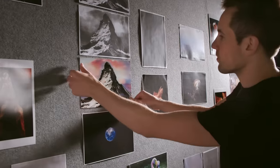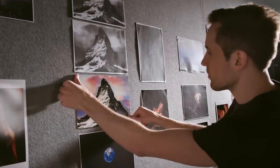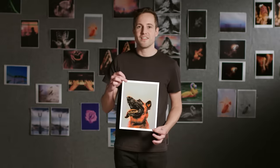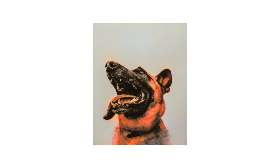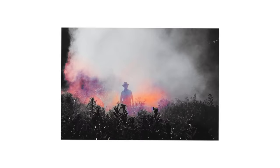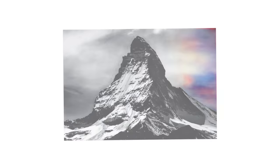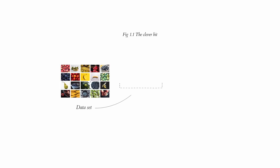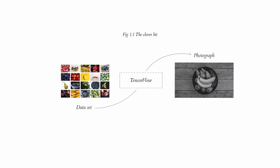My name is Emil. I use machine learning to add color to black and white photos, like this. The algorithm learns from a process of trial and error. It looks at millions of images, and then it starts finding patterns.